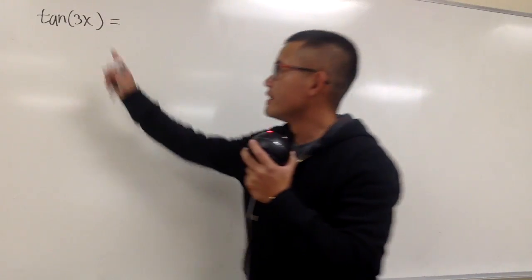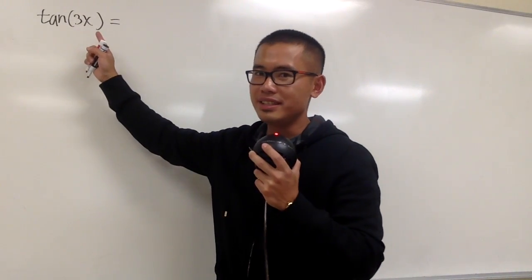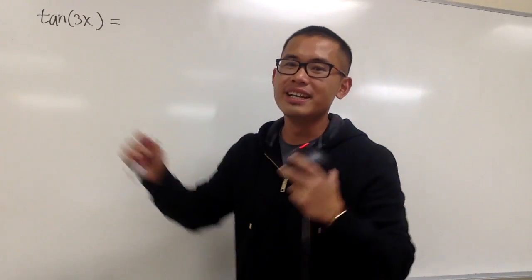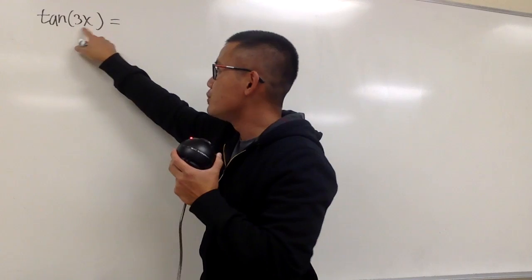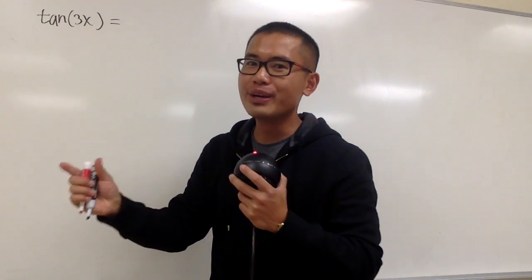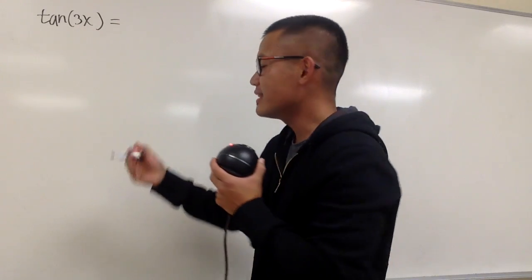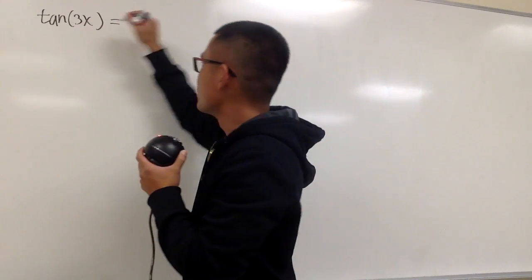We are going to write tangent of 3x in terms of tangent x. We are going to write 3x as 2x plus x. So now let's get to work.